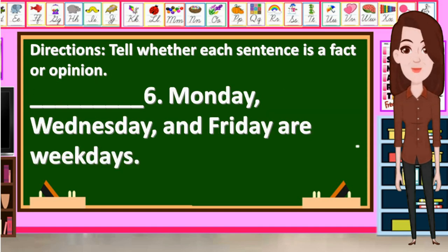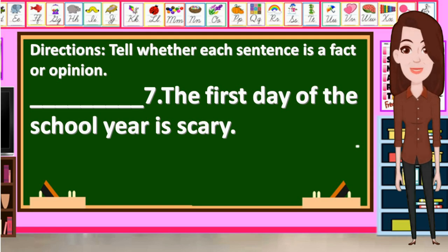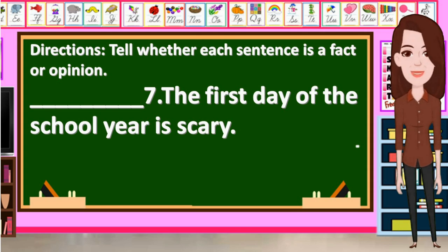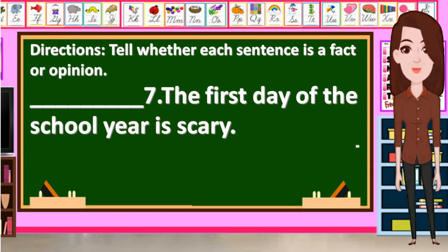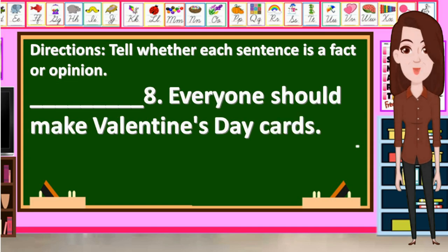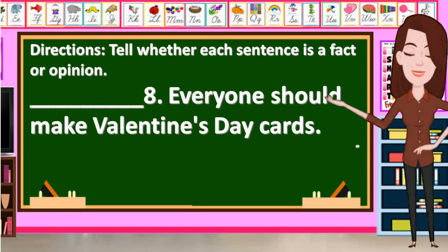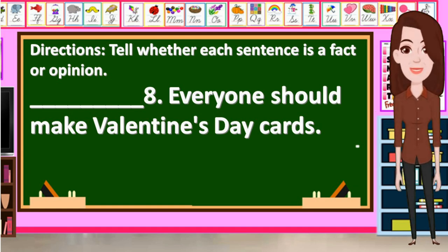Number 6: Monday, Wednesday, and Friday are weekdays. What is the correct answer? Very good — it is a fact. Number 7: The first day of the school year is scary. What do you think is the correct answer? Very good — it is an opinion. Number 8: Everyone should make Valentine's Day cards. What is the answer? Yes, it is an opinion.